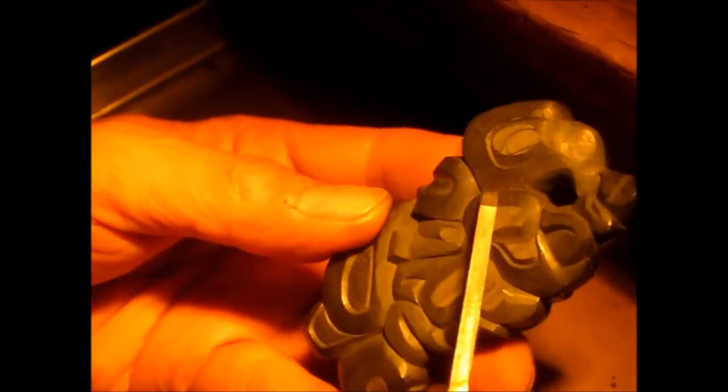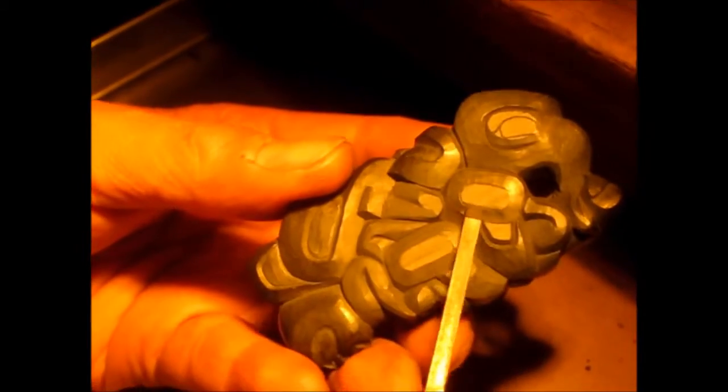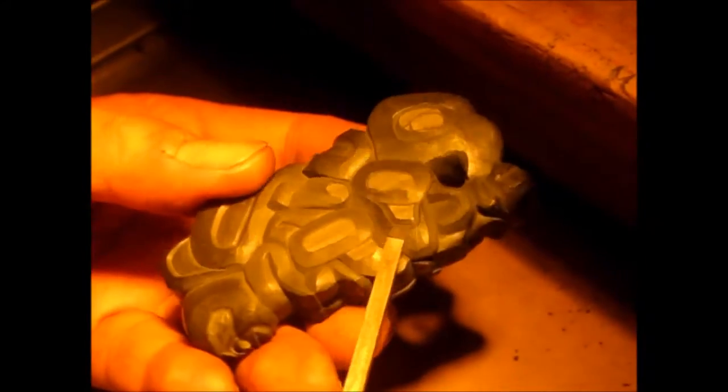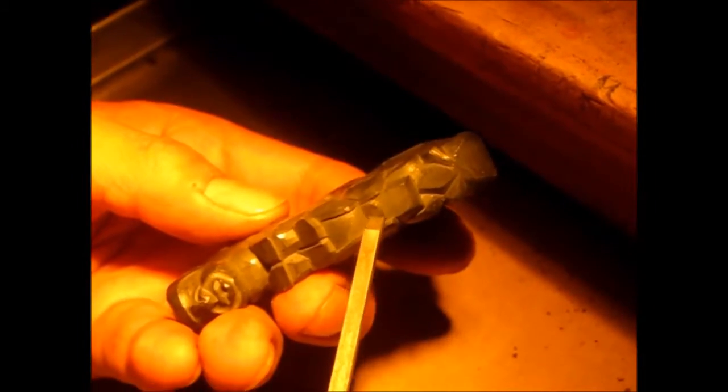And then this is the eagle's shoulder on his wing. It goes down to his feathers. And then this is his tail feathers. And that will be a little face in there.